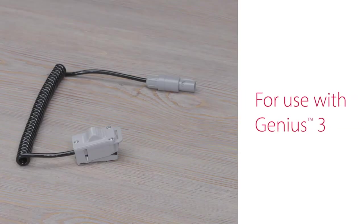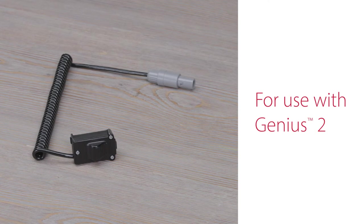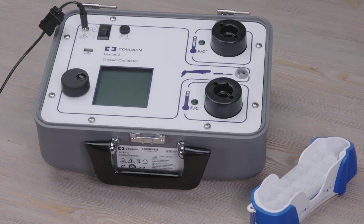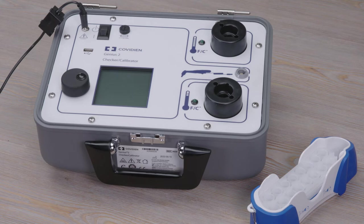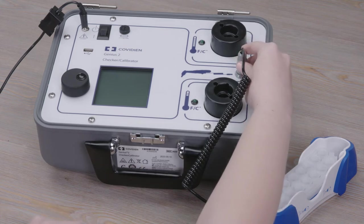When calibrating Genius 3 thermometers, use the cable with the gray connector. When calibrating Genius 2 thermometers, use the cable with the black connector. We suggest connecting your desired cable into the port on the right side of the checker-calibrator panel before powering on the device.